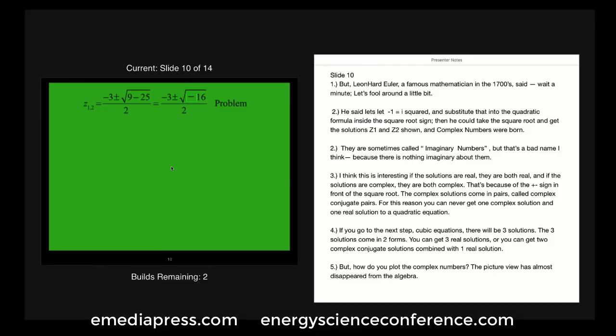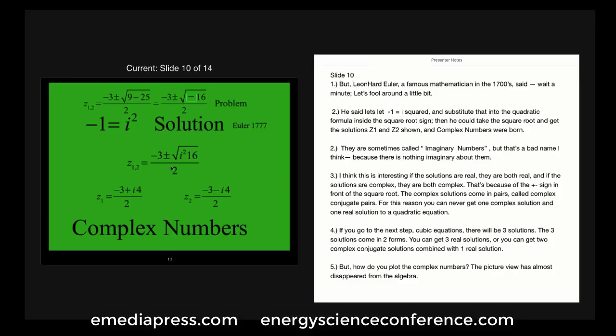But Leonhard Euler, a famous mathematician in the 1700s, said wait a minute, let's fool around a little bit. He said let's let minus 1 equal i-squared and substitute that into the quadratic formula inside the square root sign. Then he could take the square root and get the solutions z1 and z2 shown below. And complex numbers were born.